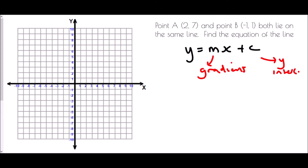I've given you a set of axes so we can visualize it. Let's draw the two points: (2, 7) is here — that's point A — and (-1, 1) is here — that's point B. We know they lie on a straight line, so we can join them up with a straight line.